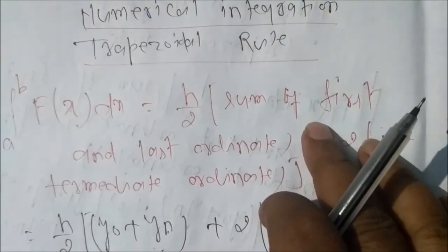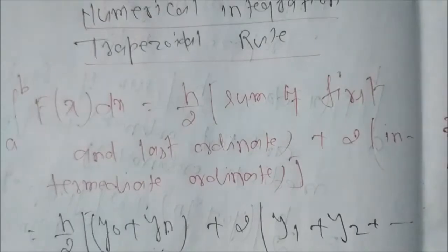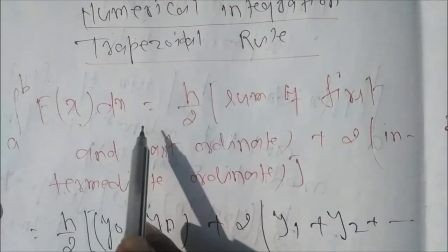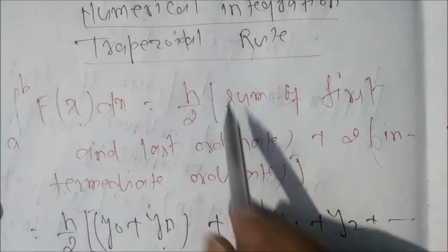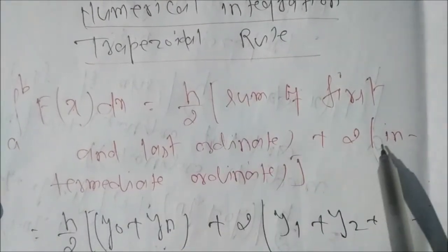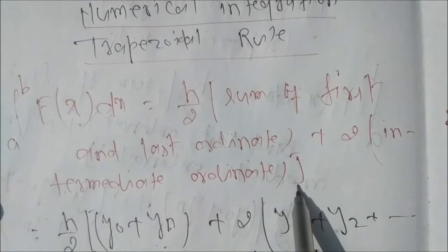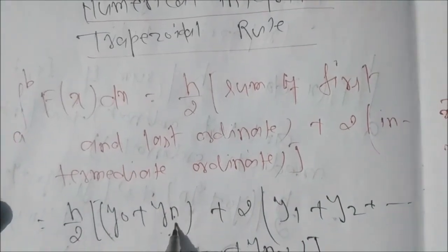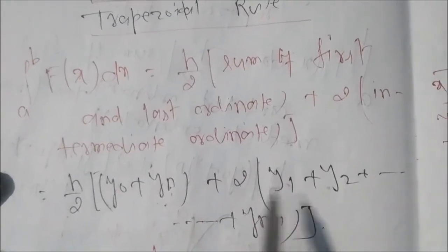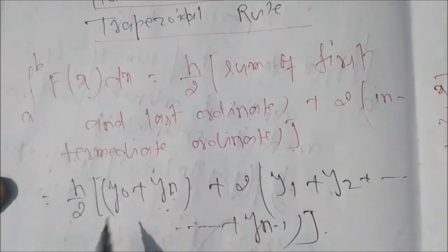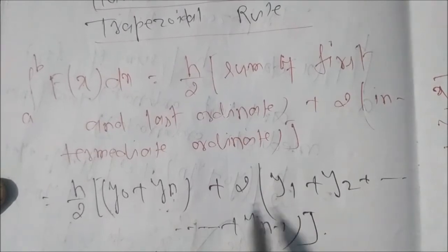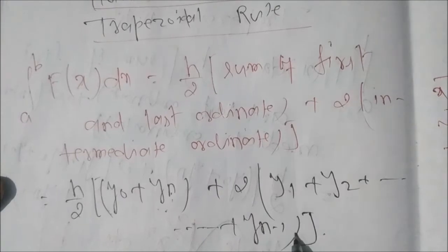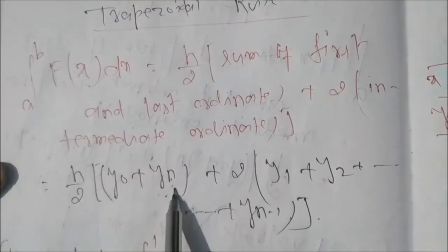Here formula for trapezoidal rule is: integration a to b f(x)dx equal to h by 2 into sum of first and last ordinate plus 2 into intermediate ordinate. That is h by 2 (y0 plus yn) plus 2 into intermediate, means those values of ordinate which lie between y0 and yn, that is 2 into (y1 plus y2 plus y3 dot dot yn minus 1).